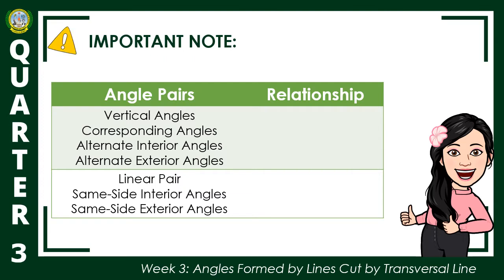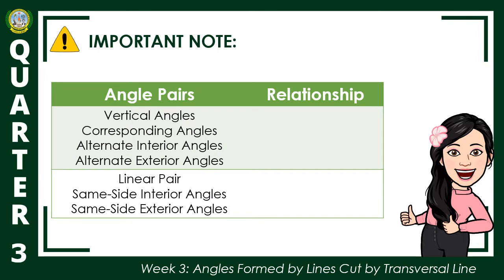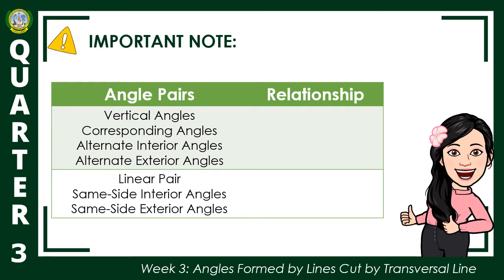Here are the different pairs of angles formed when two or more lines are being cut by a transversal line. We have the vertical, corresponding, alternate interior, alternate exterior, linear pair, same side interior, and same side exterior angle.